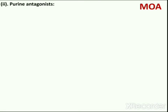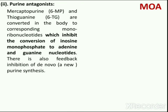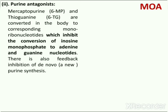The next subcategory of antimetabolites is purine antagonists. Purine antagonists 6-mercaptopurine and 6-thioguanine are converted in the body to corresponding mononucleotides, which inhibit the conversion of inosine monophosphate to adenine and guanine nucleotides. Adenine and guanine nucleotides are the building blocks for RNA and DNA. There is also feedback inhibition of de novo purine synthesis.